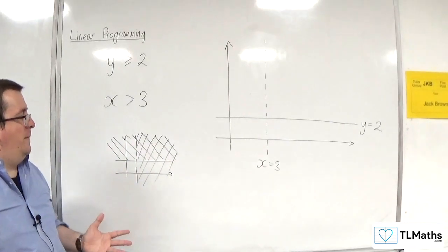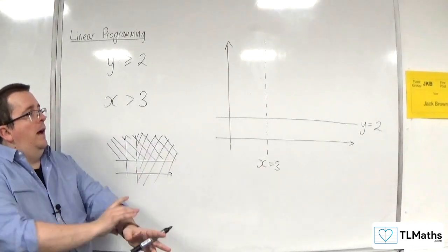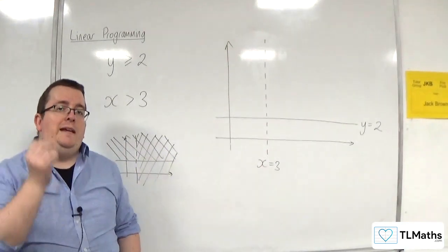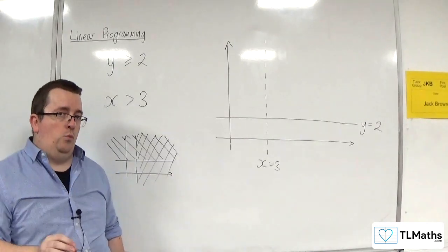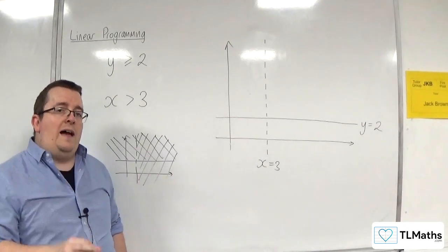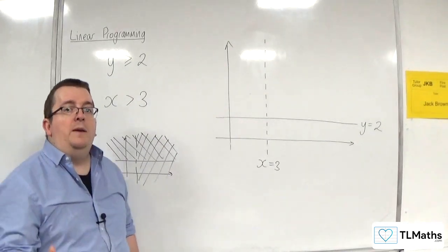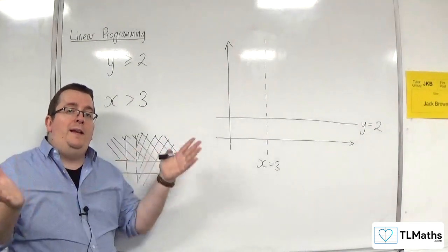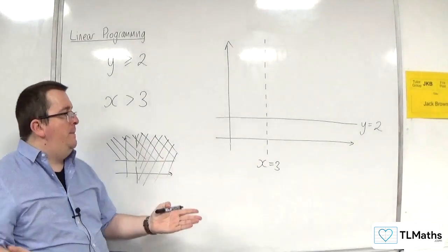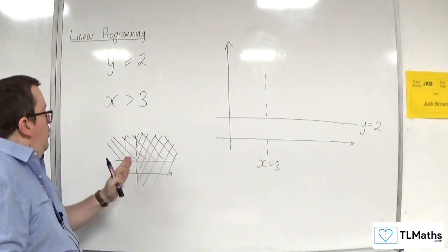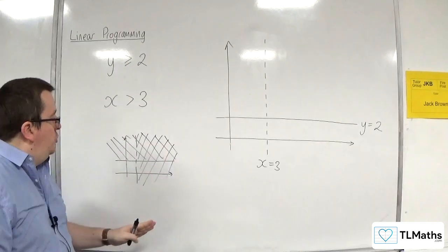So when we are using linear programming, the convention is to shade the area you don't want. Because that clearly identifies the region that you do want, because it's the region that is completely unshaded. But I am not going to shade it in this fashion either.